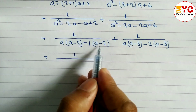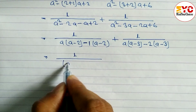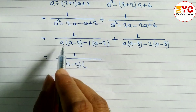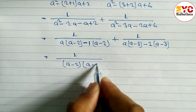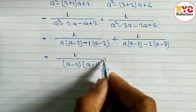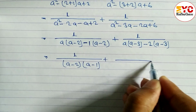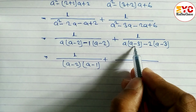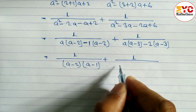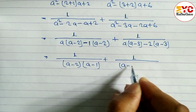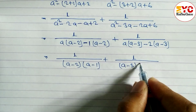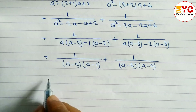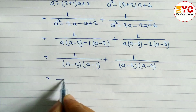So now we can write: 1/[(a-2)(a-1)] for the first expression, since a-2 is common with a-1 remaining. And 1/[(a-3)(a-2)] for the second expression, since a-3 is common with a-2 remaining.